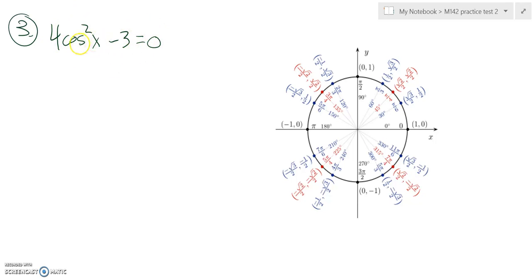So let's get that cosine all alone. Then we can deal with that square. So first thing that I'm going to do is add three to both sides.